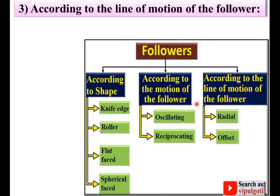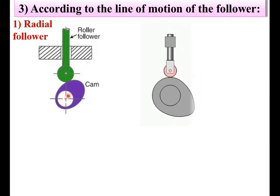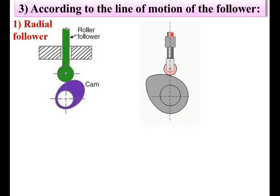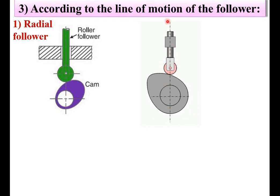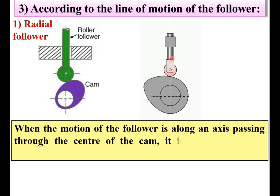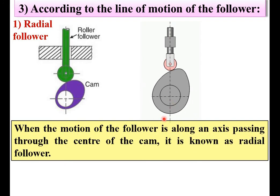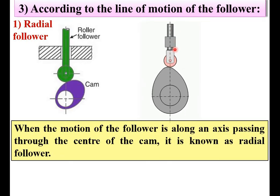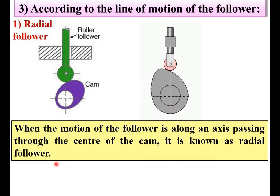Next, according to the line of motion of the Follower: the radial Follower. Here you can see that the axis of the Follower and the axis of the CAM both coincide. When the motion of the Follower is along an axis passing through the center of the CAM, it is known as a radial Follower.